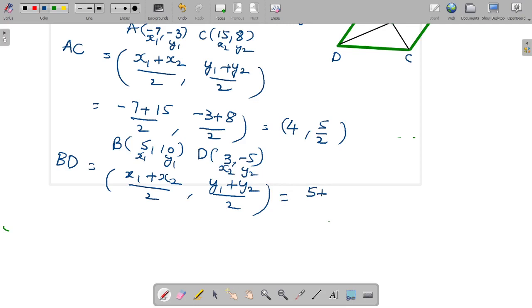5 plus 3 by 2 comma 10 plus -5 by 2 is equal to 8 by 2 is 4, 10 minus 5 by 2, 5 by 2.